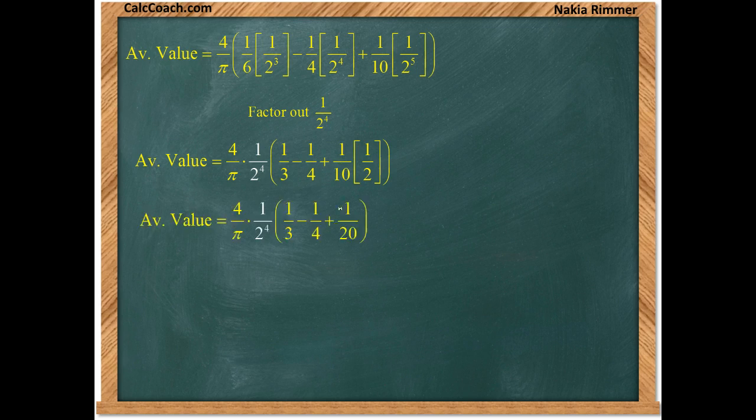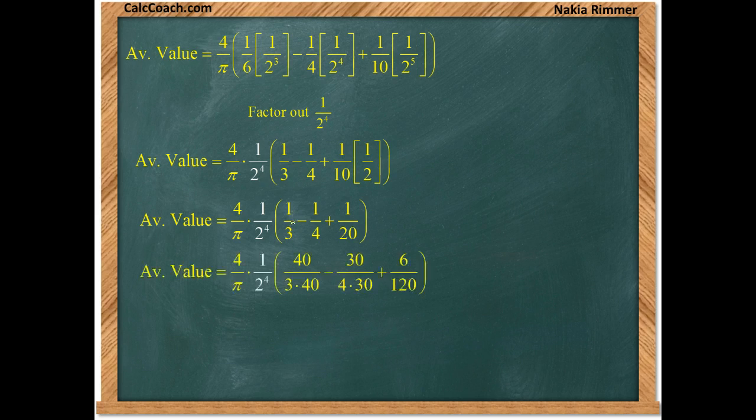Let's square out one minus u squared. We'll get one minus two u squared plus u to the fourth. Now let's distribute the u to the fifth. We'll get u to the fifth minus two u to the seventh plus u to the ninth.